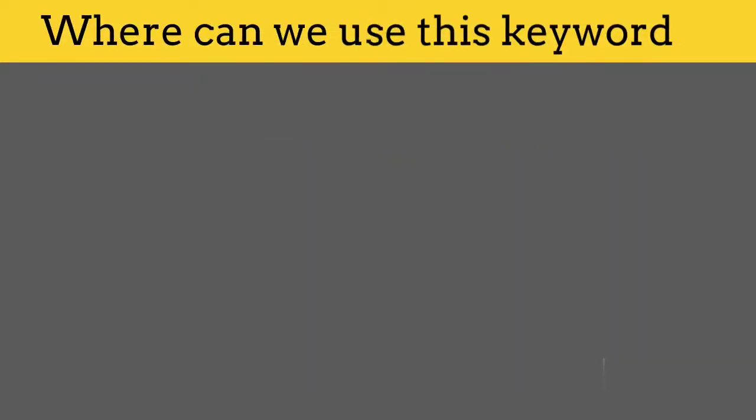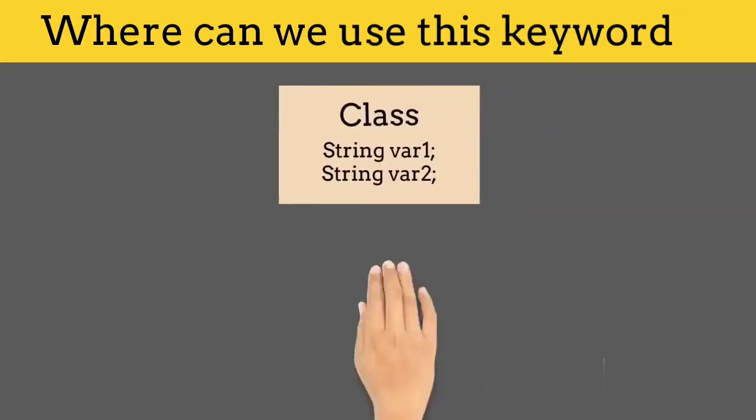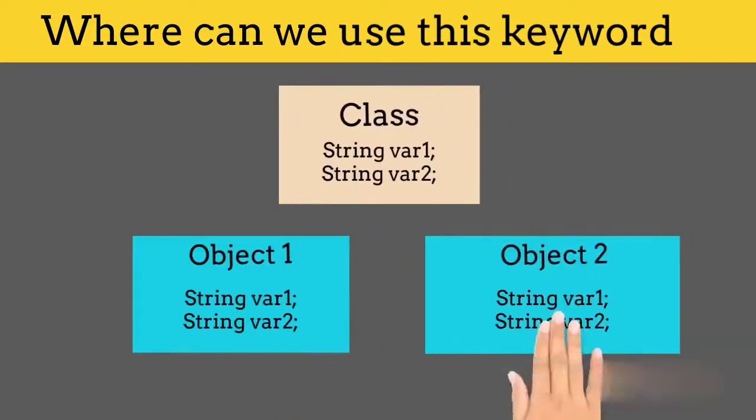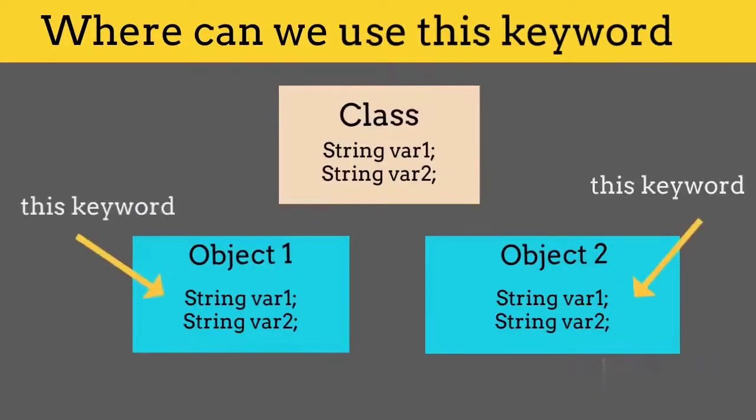Let's understand where else we can use this keyword. As we all know, when an object of a class is created, Java will make a copy of variables and functions and then share that copy with the object. So this keyword is used to refer to the current object.